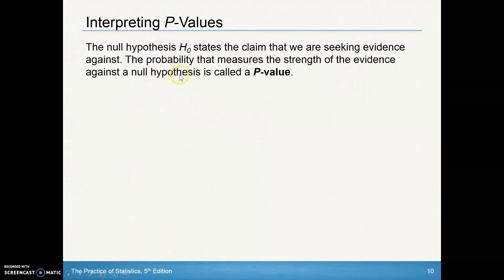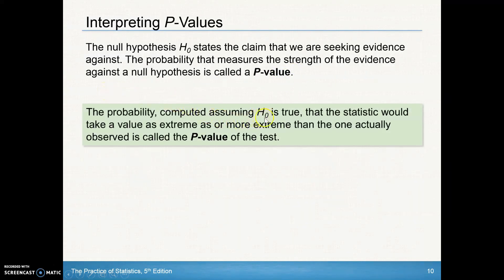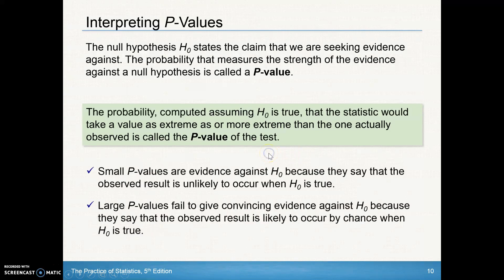We can do this with p-values. The null hypothesis states the claim that we are seeking evidence against. The probability that measures the strength of the evidence against the null hypothesis is called the p-value. That 3 out of 400, that's a p-value. The probability, computed assuming the null is true, that the statistic would take a value as extreme as or more extreme than the one actually observed is called the p-value of the test. That's why I counted all 3 of those from the ones at 0.64 and less - there were 3 of those that were there or more extreme. We've known this before: small p-values are evidence against the null hypothesis. We usually do this at about a 5% level, and if it's smaller than 5%, we would say we have statistical significance and say that couldn't have occurred by chance. Large p-values, generally above 5%, fail to give convincing evidence against somebody's claim.